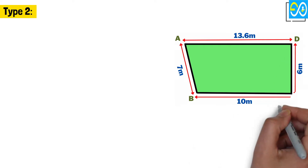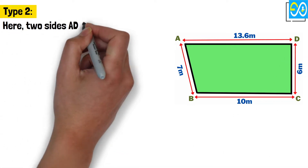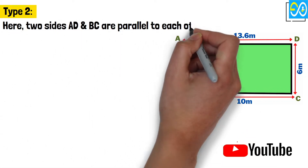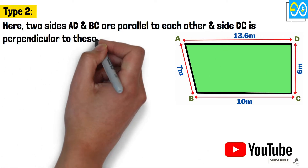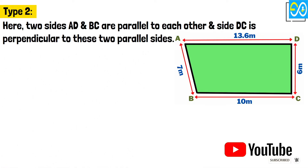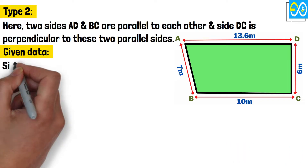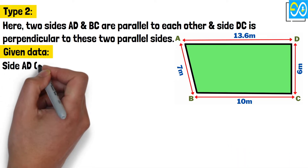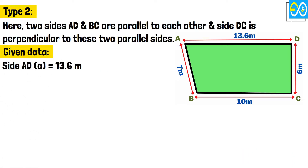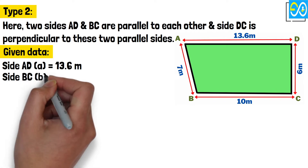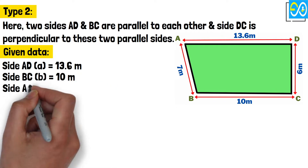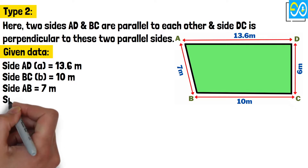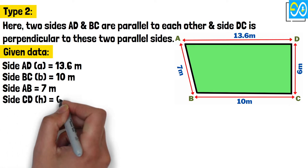Type 2. Here, two sides A, D and B, C are parallel to each other, and side D, C is perpendicular to these two parallel sides. Given data: Side A, D equals 13.6 meters. Side B, C equals 10 meters. Side A, B equals 7 meters. Side C, D equals 6 meters.